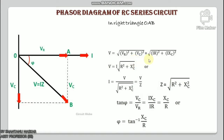From the phasor diagram: I = V / √(R² + XC²) = V / Z, where Z = √(R² + XC²) is the total impedance of the RC circuit in ohms. It is clear from the phasor diagram that the current in the circuit leads the applied voltage by an angle φ, which is the phase angle. tan θ = VC / VR = (I·XC) / (IR) = XC / R, so θ = tan⁻¹(XC / R).